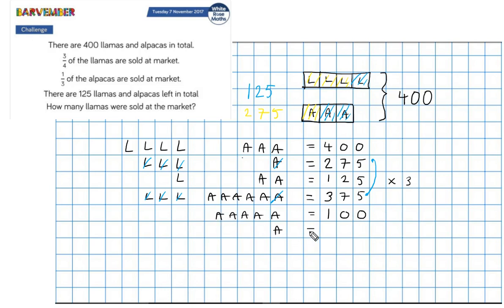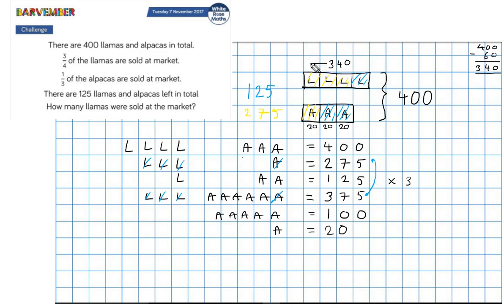100 divided by five gives me what one block of alpacas is worth. So one block of alpacas is 20. That means all three alpaca blocks together is 60. If I take 60 away from 400, that gives me 340. So four blocks of llamas is worth 340. I said alpacas earlier — that should be llamas.